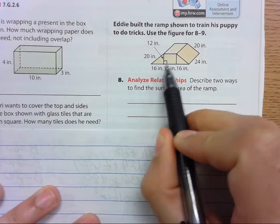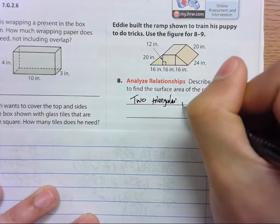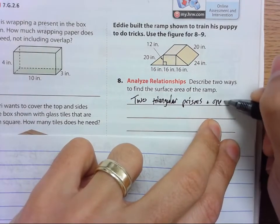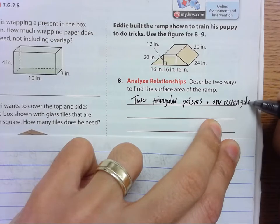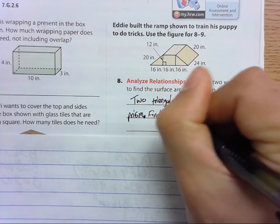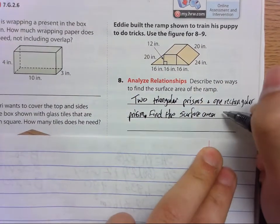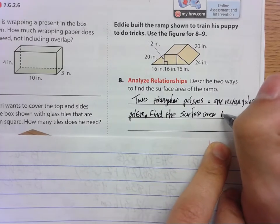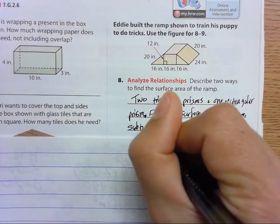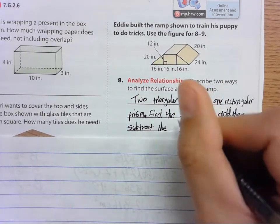Well, one way we could cut this up and make two triangular prisms and one rectangular prism. We would find the surface area, then add them, then subtract the overlapping area or the overlapping areas.